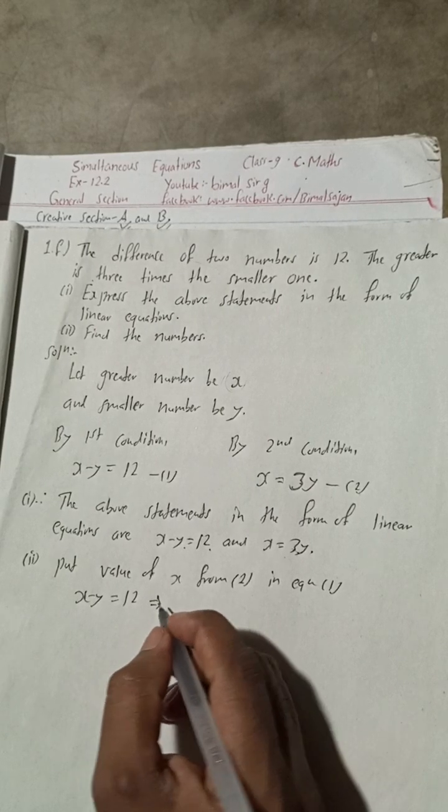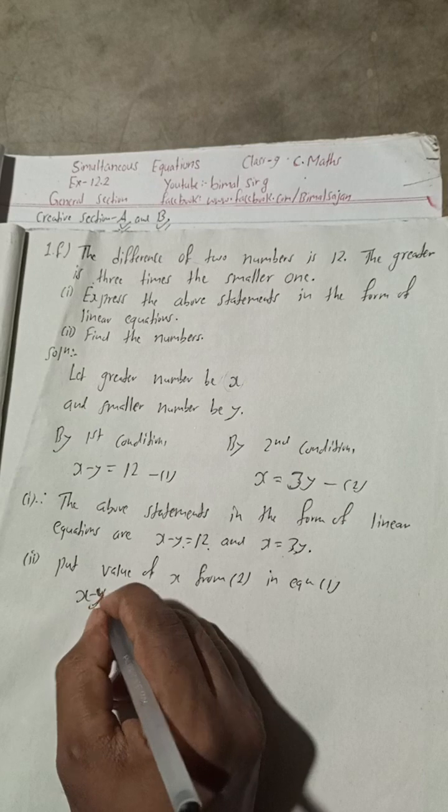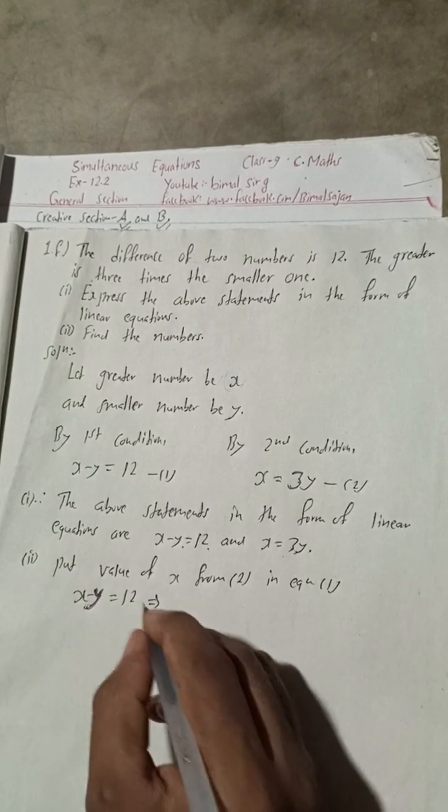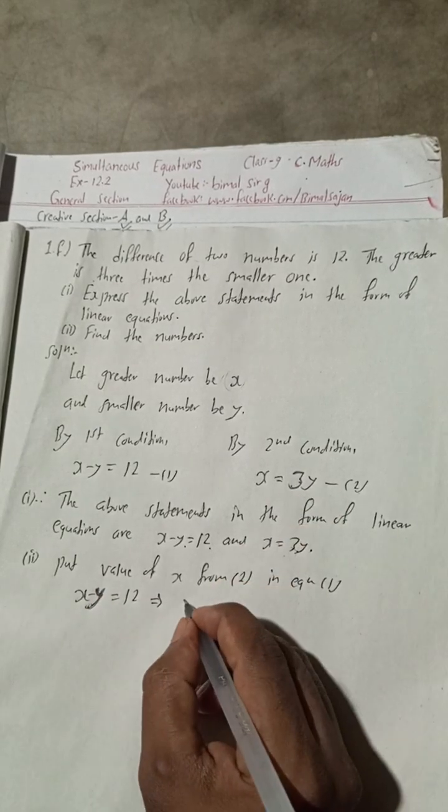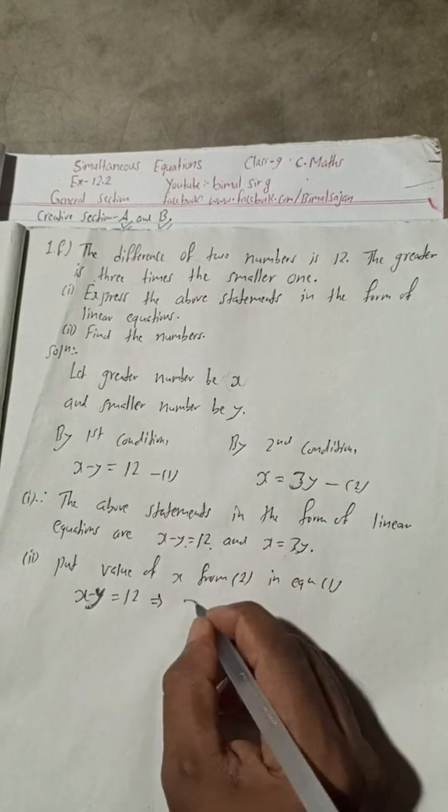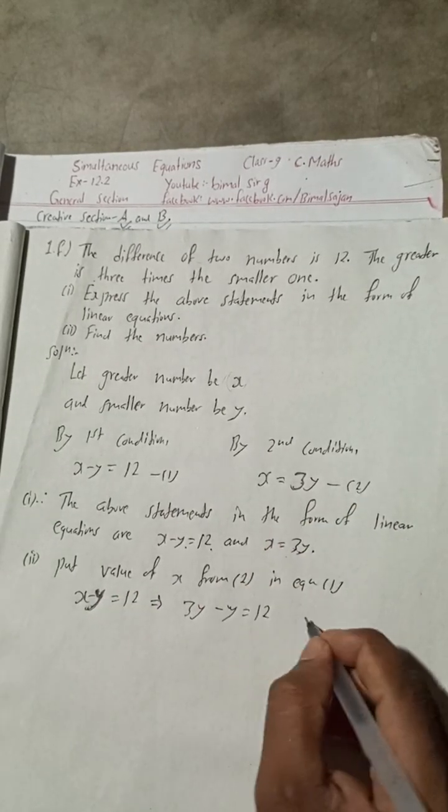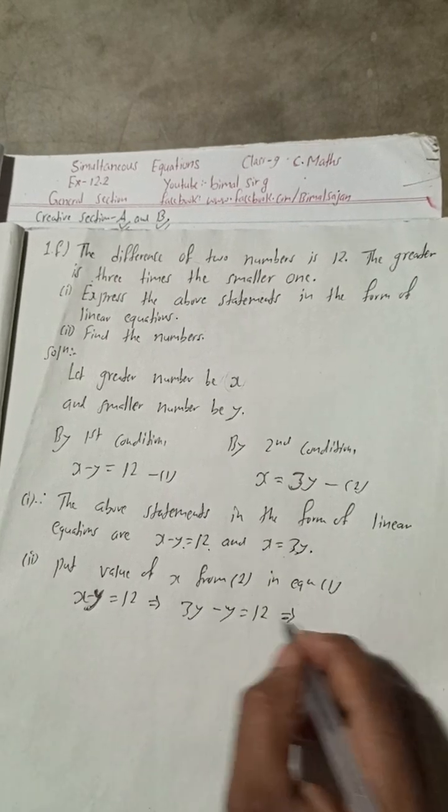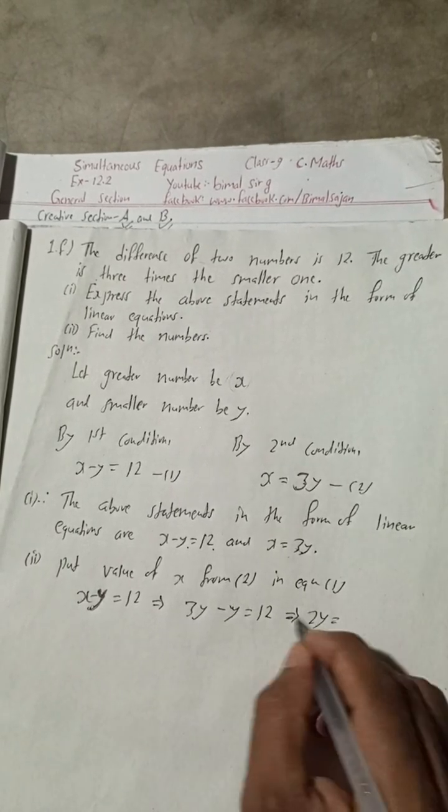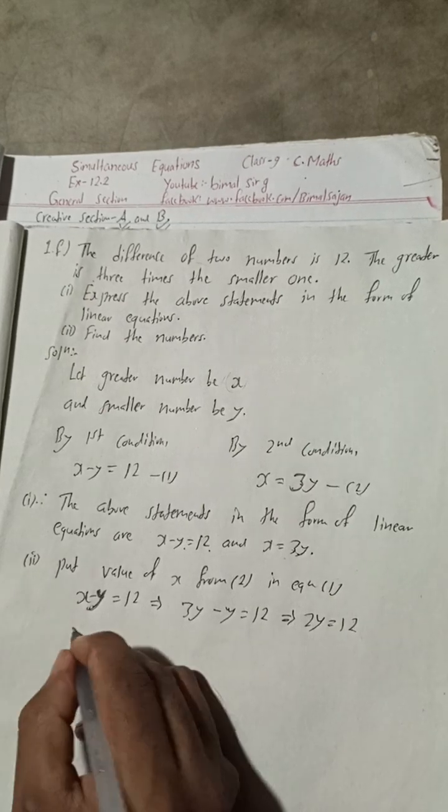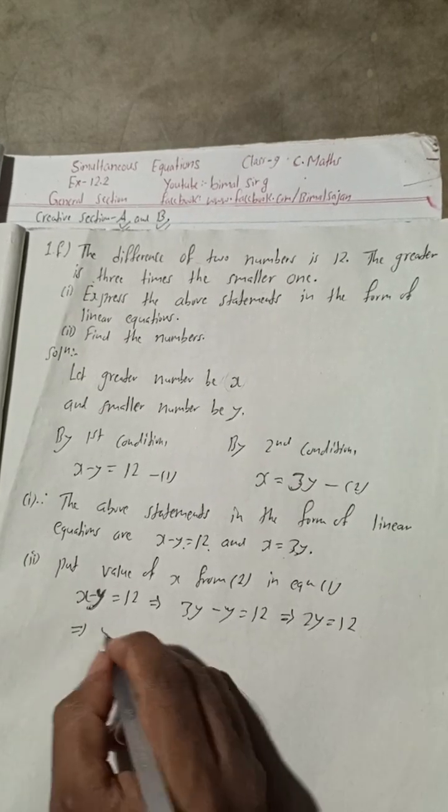3y minus y is equal to 12. So 3y minus 1y will be 2y is equal to 12. This implies y is equal to 12 divided by 2, which is 6.